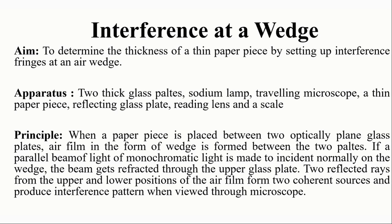The major principle involved in this experiment is getting the interference pattern when a paper piece is placed between the two optical flat glass plates. An air film is formed — a wedge-shaped air film forms between the two glass plates. If a parallel beam of monochromatic light is made to incident normally on the wedge, the beam gets refracted through the upper glass plate. The two reflected rays from the upper and lower surfaces of the air film form two coherent sources, which interfere and give us the interference pattern when viewed through the microscope.